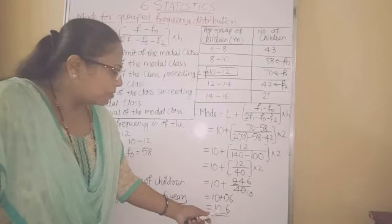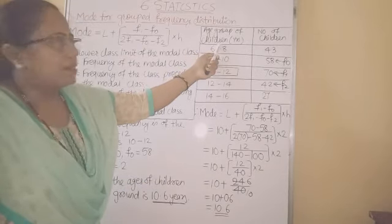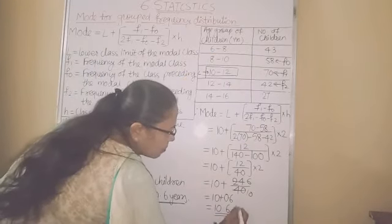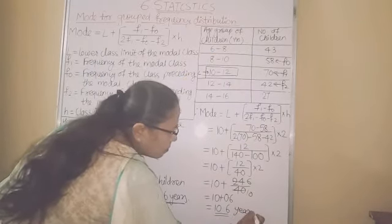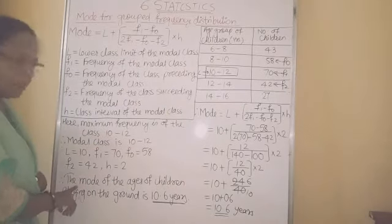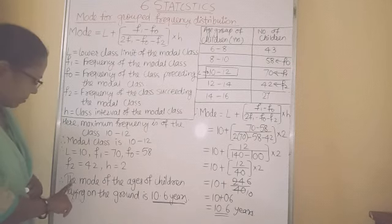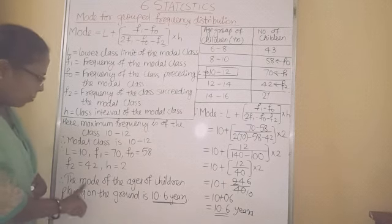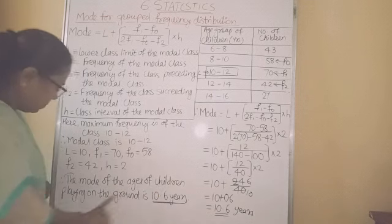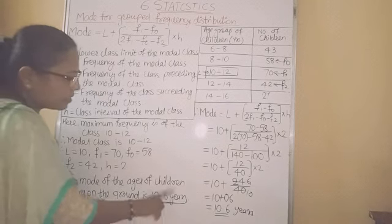This mode has the unit from the table, which is years. We will write the answer in a statement: the mode of the ages of children playing on the ground is 10.6 years.